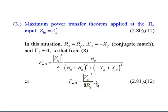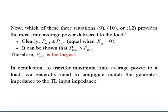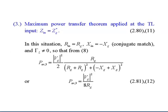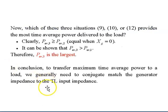Therefore, the maximum P_average for Case 3 equals |V_G|² over 8R_g. Of all three cases, Case 3 — where Z_in equals the conjugate of Z_g — provides the most time-average power delivered to the load. In conclusion, to transfer maximum time-average power to a load, we generally need to conjugate-match the generator impedance to the transmission line input impedance.